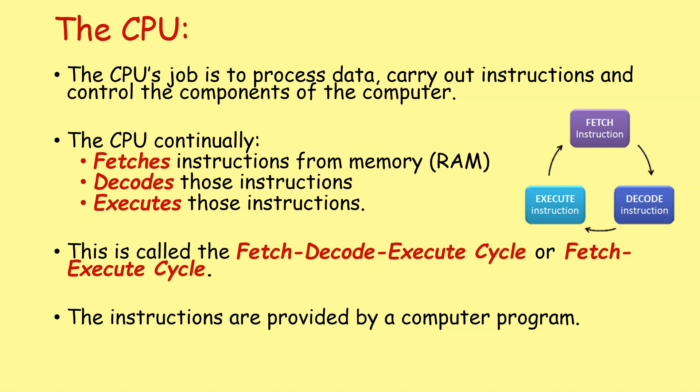It is fetching instructions from memory, what we call RAM, decoding those instructions, and executing those instructions. And this is a continuous cycle that we often refer to as the fetch, decode, execute cycle, or just the fetch execute cycle. The instructions that are fetched, decoded, and executed all are provided by computer programs that people have written that tell the computer what to do. So we've got this idea: it fetches an instruction, it then decodes that instruction, and then it executes that instruction, and the cycle continues over and over again, millions or in the case of modern CPUs billions of times per second.